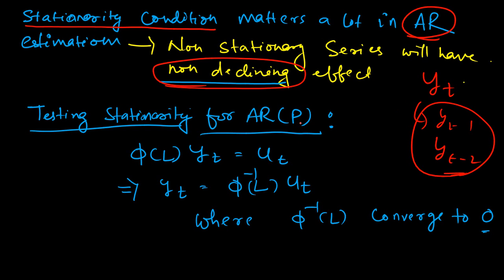What is ideally expected is that the correlation with increasing lags should actually decrease and eventually go down to 0. The impact of a time series should be highest for the first lag and then slowly diminish to 0. This is one of the main assumptions in the estimation of time series models, and in the AR model in particular, this stationarity condition is a mandatory requirement.